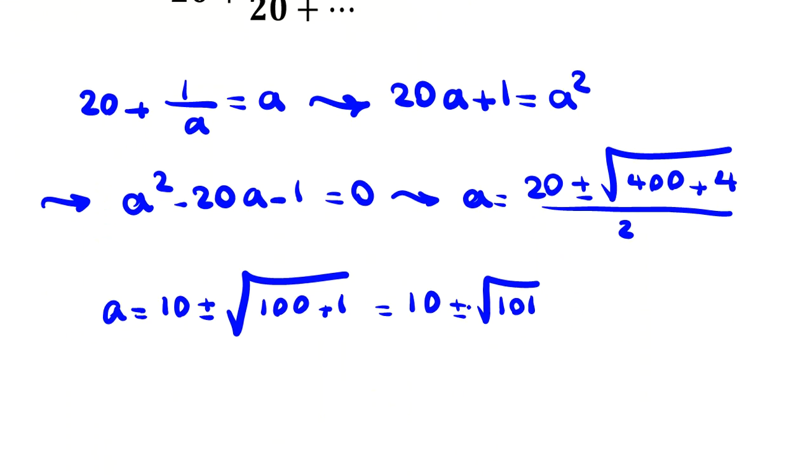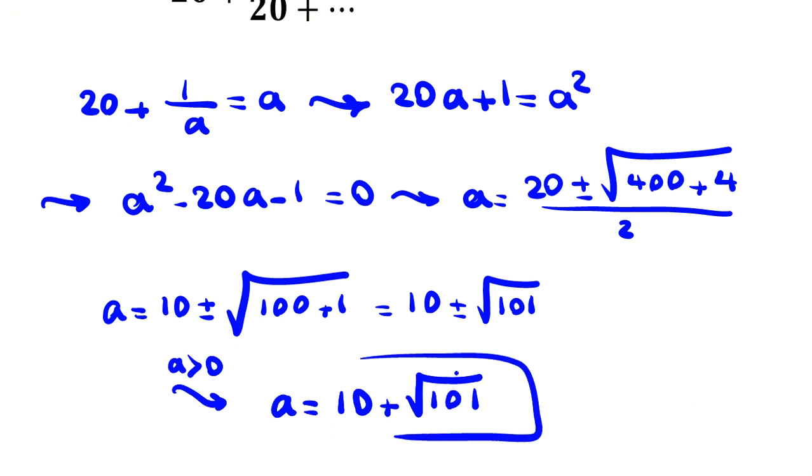We can't select negative because it is greater than 10, so 10 minus would be negative. Because a is positive, a will be 10 plus root 101. So the answer to this problem is this.